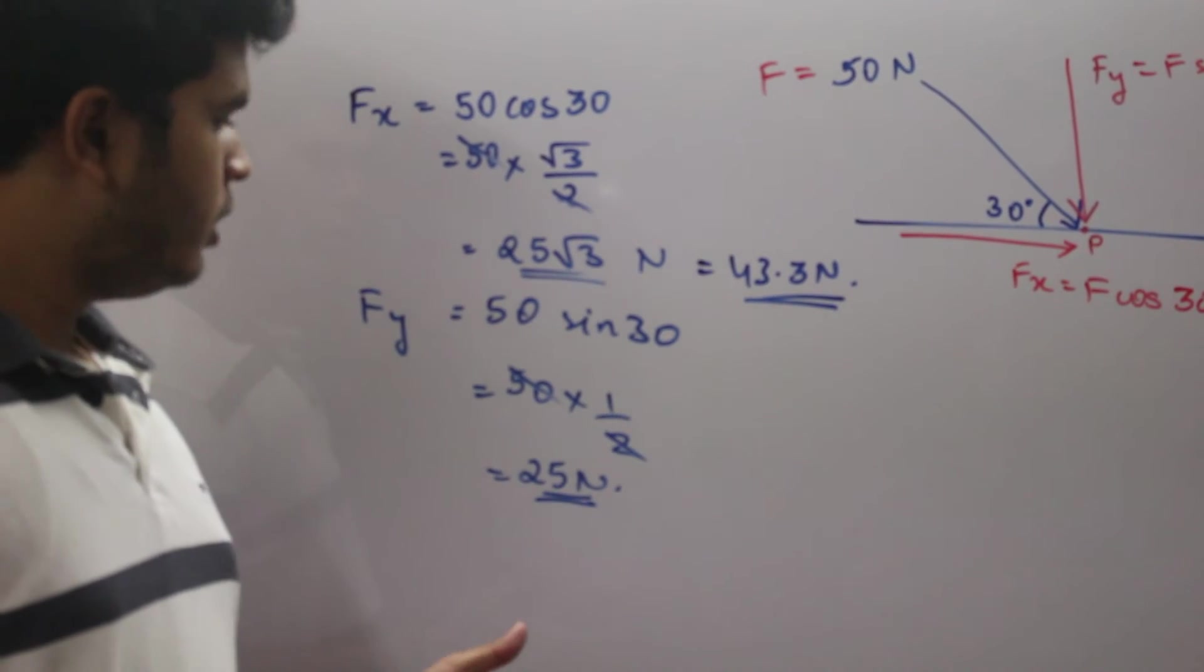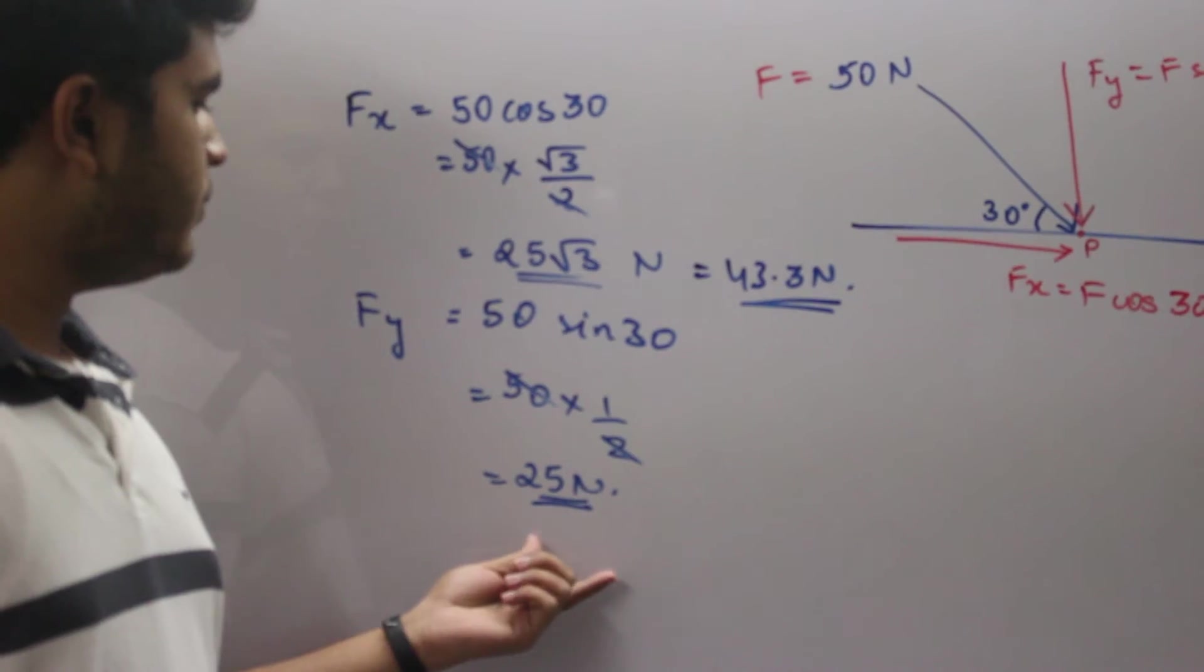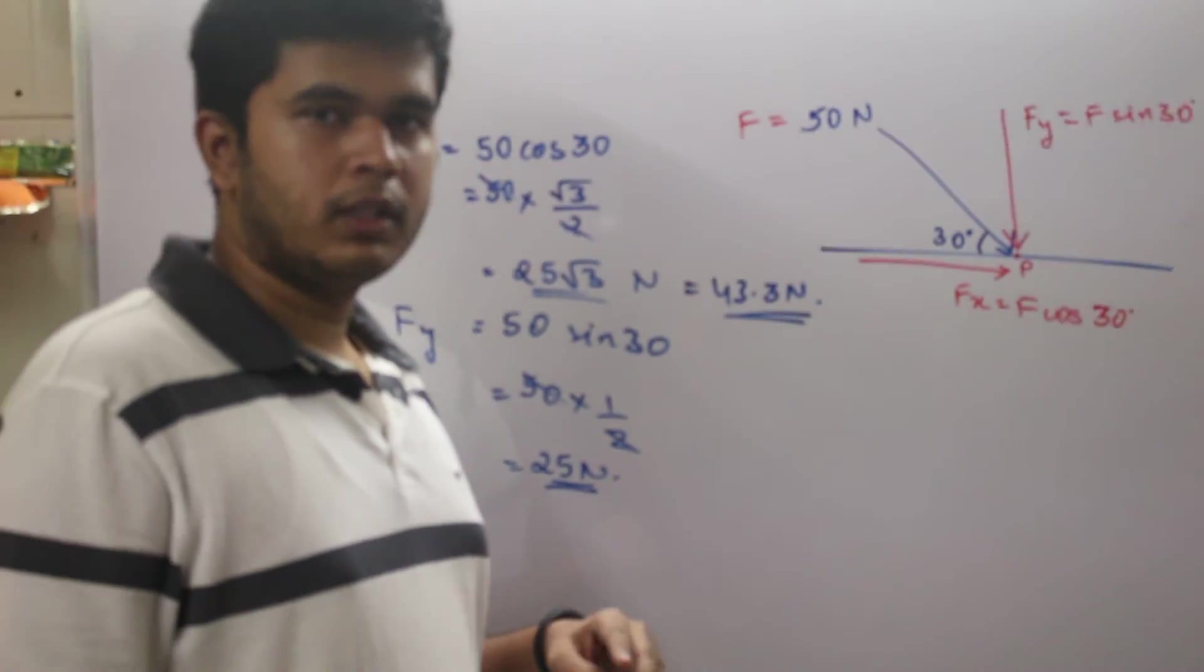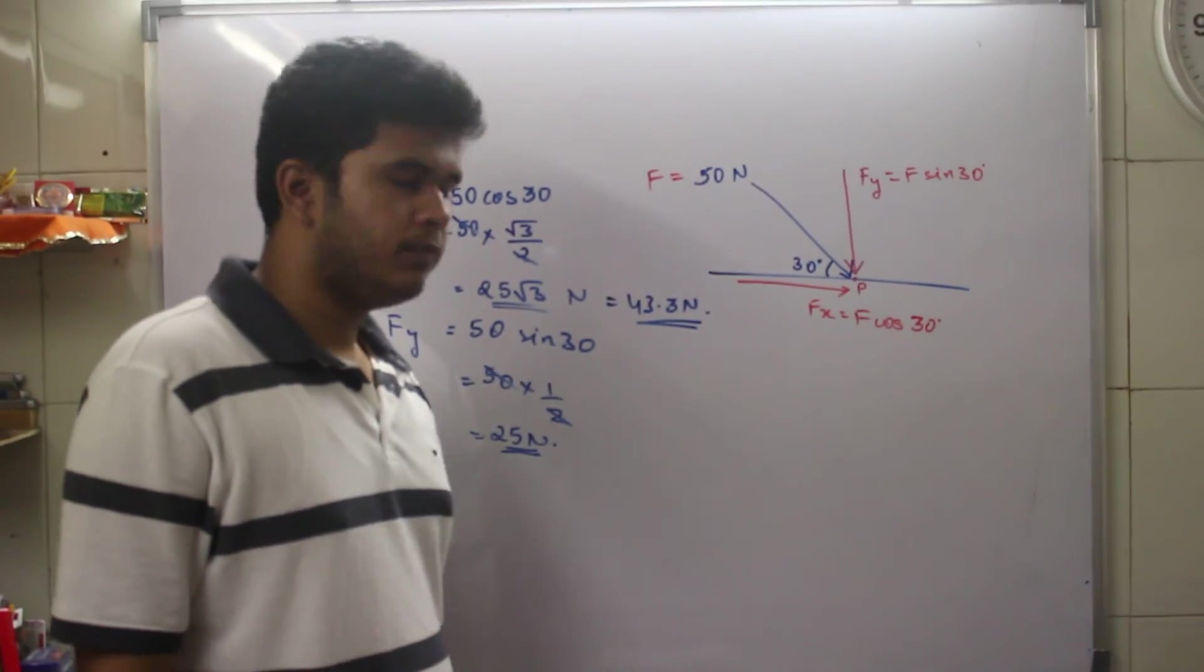Your final value of F_y is 25 Newtons. This is how you resolve forces in two different parts, horizontal and vertical. Thank you.